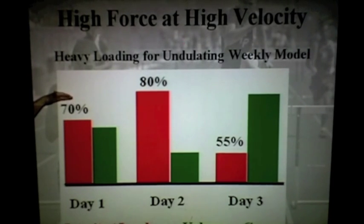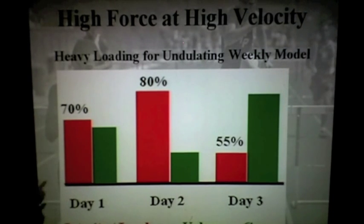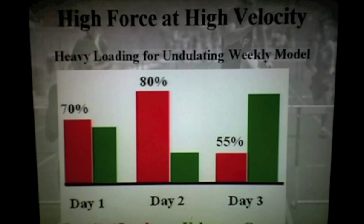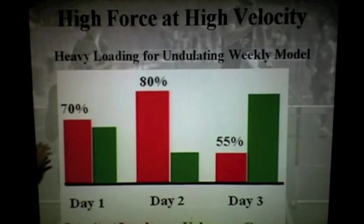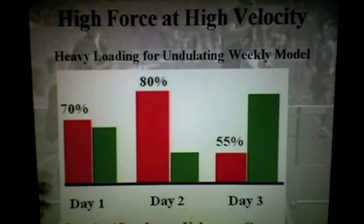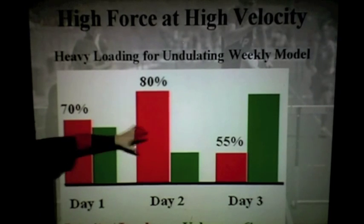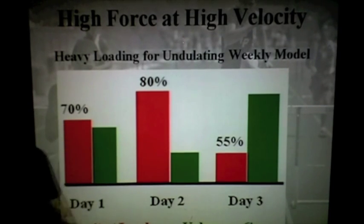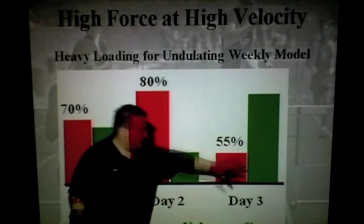Now, the same loading structure applies for light loads. You have to get over the idea that to get someone strong you must lift heavy — you can lift 80 percent at high speed and apply high force that way. In my programming, I'm either above 80 percent or below 80 percent. Speed is the key concept below 80, and I include plyometrics in that category. Day one: 70 percent. Day two: 80 percent for singles — five sets of singles, explosive — often paired with plyometrics. Day three: 55 percent.